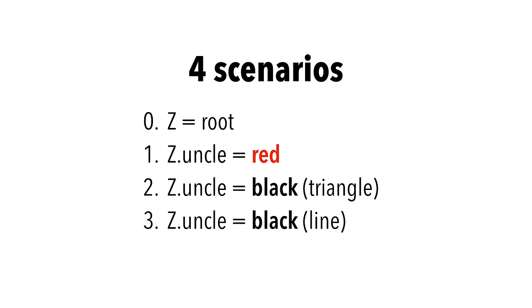There are two different cases when Z has a black uncle. For now, ignore the triangle and line part in parentheses. We'll cover those later.